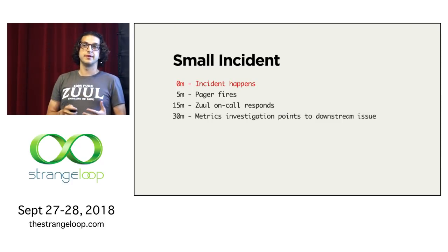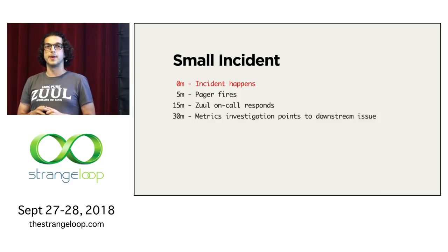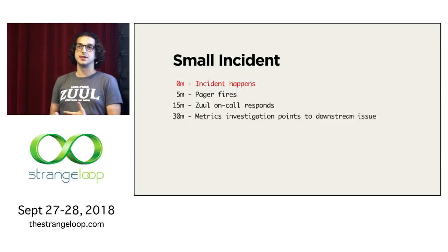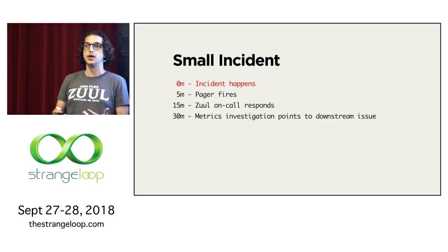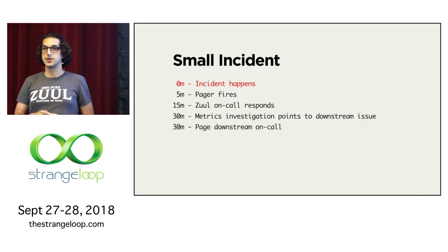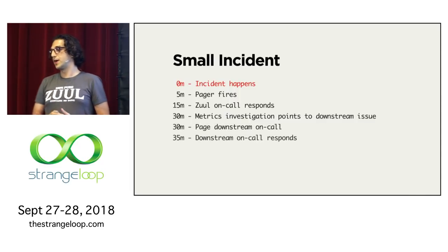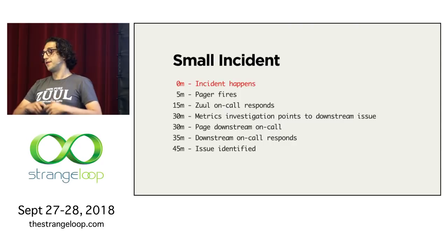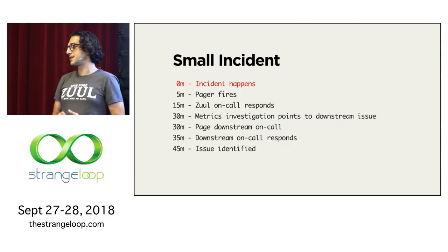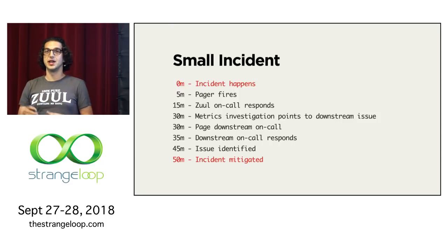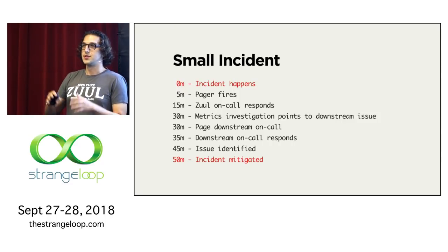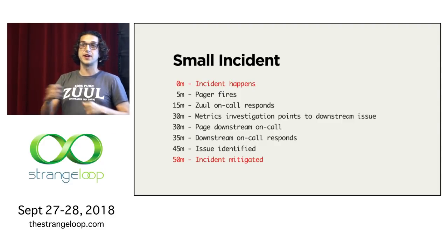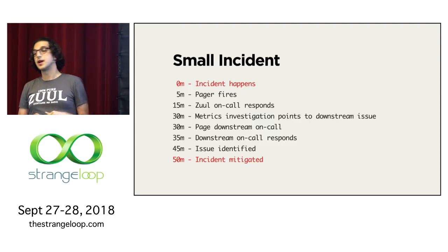If it's a minor incident, the Zuul on-call can dig through the metrics and maybe figure it out in 15 minutes. Then they realize it's actually a downstream system that didn't get paged because we didn't have that visibility. So now the Zuul on-call has to page the downstream on-call, who then looks through metrics, identifies the issue in 10 minutes if they're lucky, and fixes it in five if it's a config change. This best-case scenario still takes about 50 minutes to resolve — and the first 30 minutes is just figuring out who to page. This is very problematic.